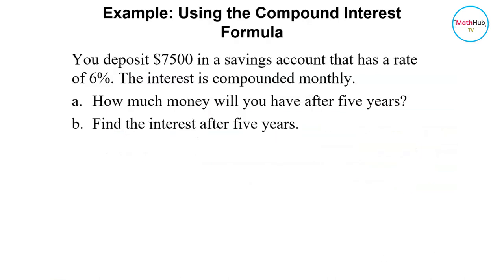Now let's consider this example here. You deposit 7,500 in a savings account that has a rate of 6%. The interest is compounded monthly. So take note, this is compounded monthly.